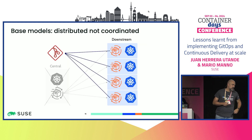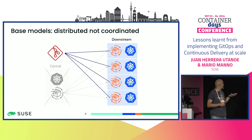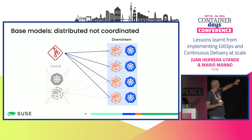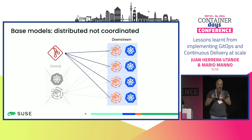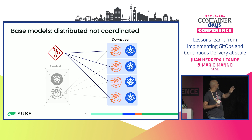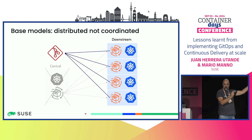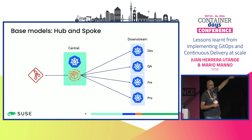Another approach — discarded early — is removing the central piece to avoid a single point of failure and having all downstream clusters connect directly to the Git repo. We discarded this because even with automation to deploy a CD stack on each downstream cluster, it's always a challenge. You need external automation to synchronize, and all managed clusters need direct access to your repos. One of the advantages of centralized CD software is that it isolates this — your managed clusters don't need to see the Git repos.